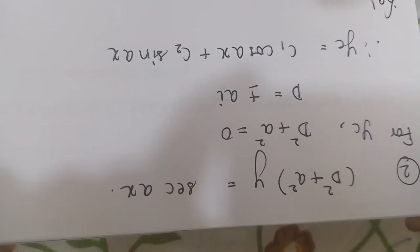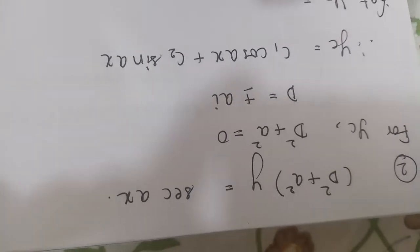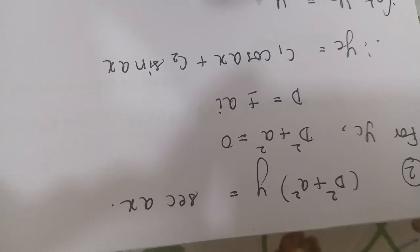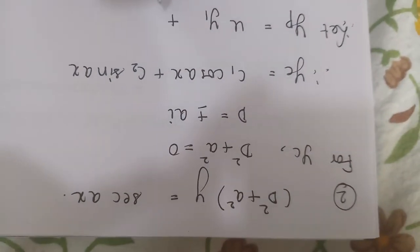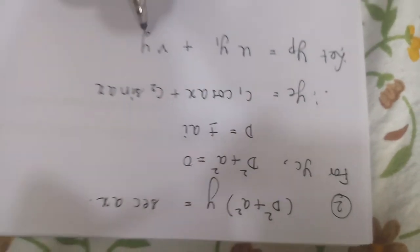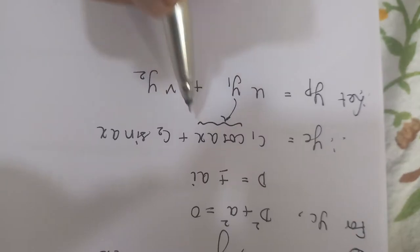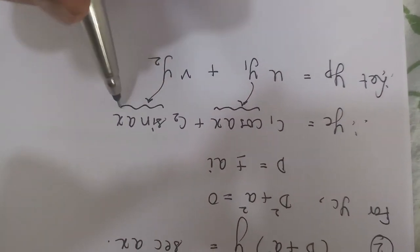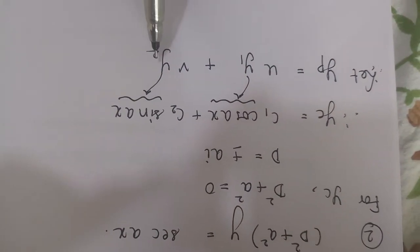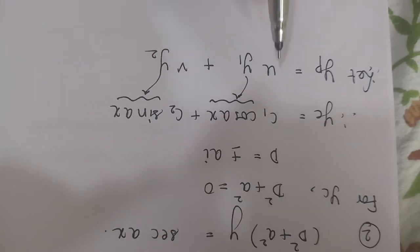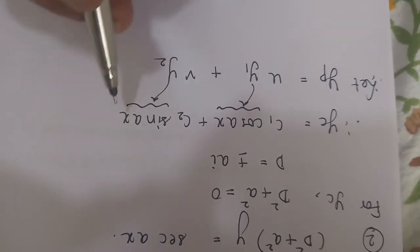Now let Yp be assumed as u into y1 plus v into y2, where y1 is nothing but cos ax and y2 is nothing but sin ax. So y1 and y2 that means we already know. The only thing that you need to find is u and v.